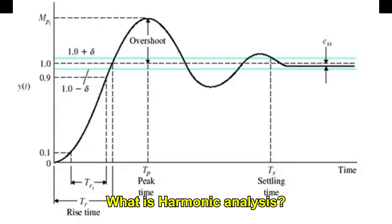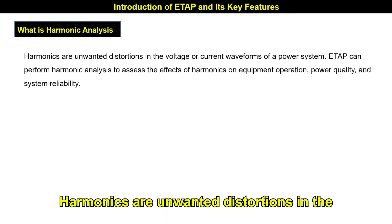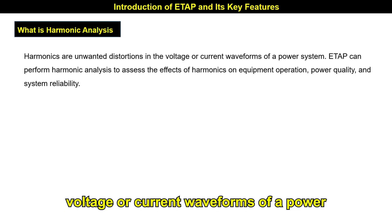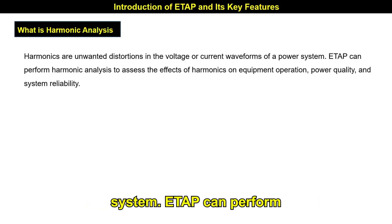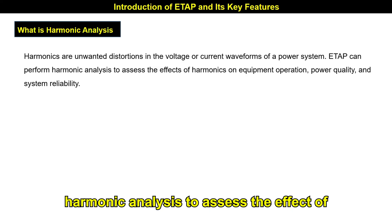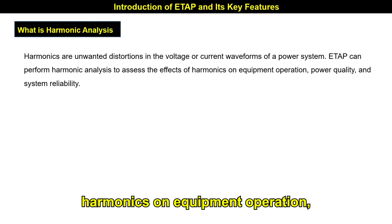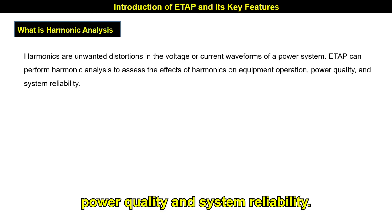What is harmonic analysis? Harmonics are unwanted distortions in the voltage or current waveforms of a power system. ETAB can perform harmonic analysis to assess the effect of harmonics on equipment operation, power quality, and system reliability.